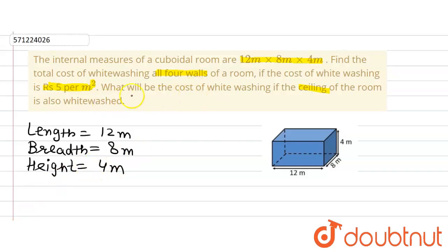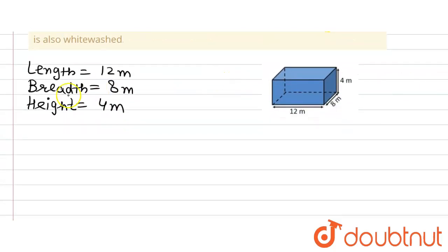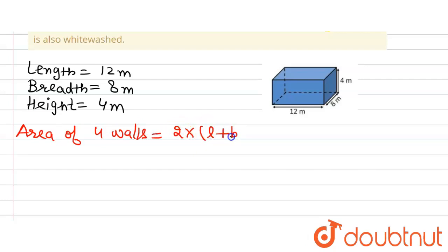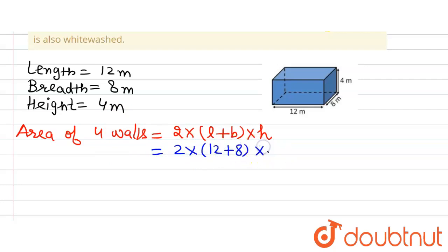To find the cost of whitewashing the 4 walls, we first find the area of the 4 walls. The formula we use is: area of 4 walls of a cuboid = 2 × (length + breadth) × height. Putting in the values, we get 2 × (12 + 8) × 4, which gives 2 × 20 × 4 = 160 meter square. So this is the area of 4 walls.